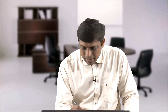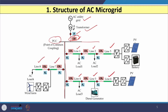The structure of the AC microgrid has the utility grid connected through a transformer to a bus known as the point of common coupling (PCC). Before the PCC, there is a relay along with a circuit breaker so that we can disconnect the utility grid from the rest of the system. There is a feeder with several lines: line 1, line 2, line 3, line 4, line 5, line 6, line 7, and line 8.